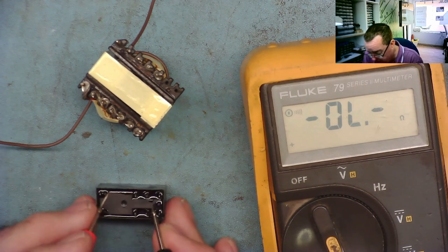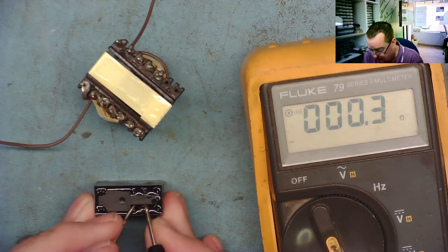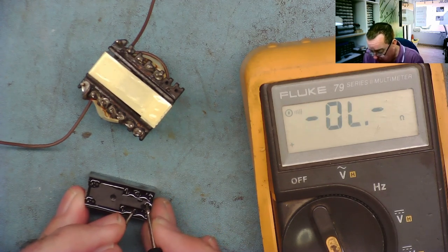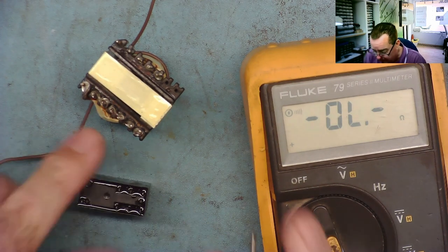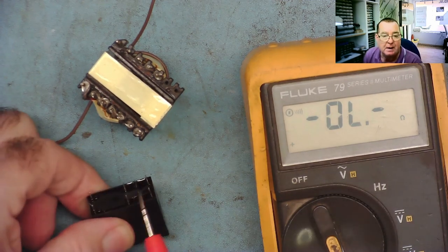Each one's a changeover. Most likely the middle one connects to here. That's the normally closed. This is the other pole. And this is the normally open. So what we need to use is the normally closed connection. So that's these two.